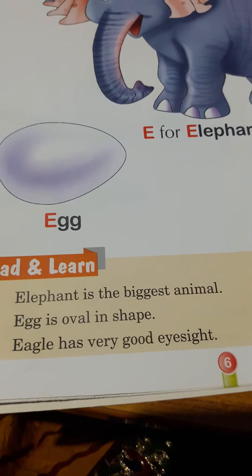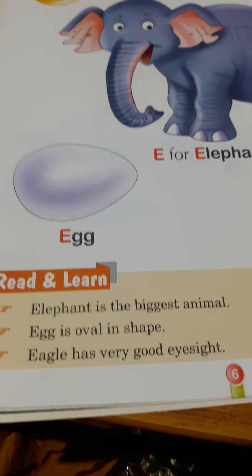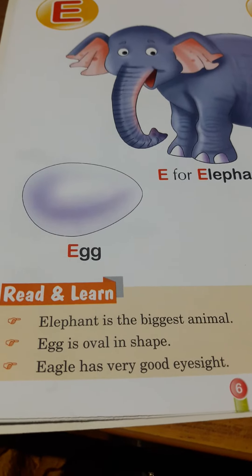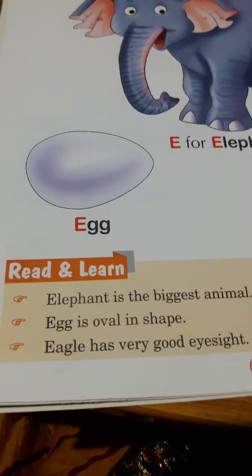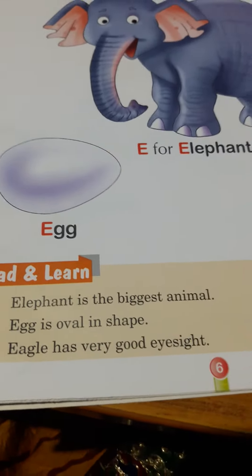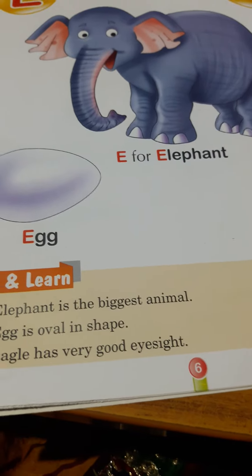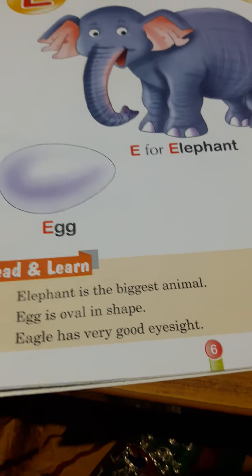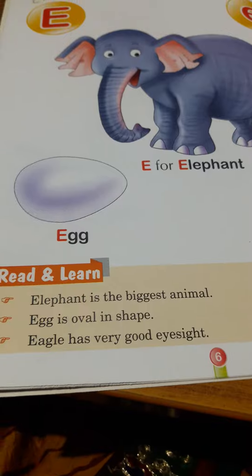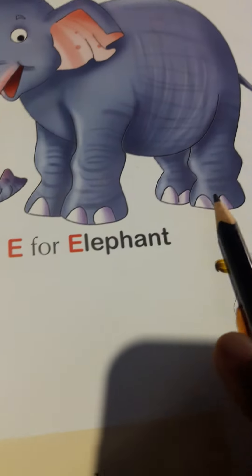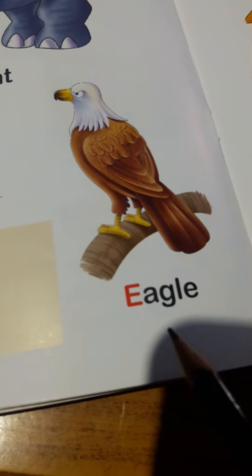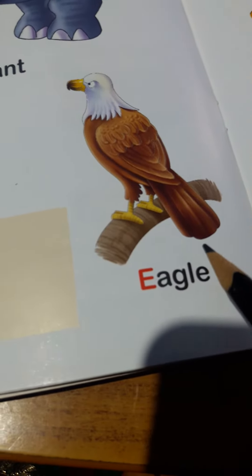Elephant is the biggest animal of the world. Elephant has two big ears and one big trunk. Egg is oval in shape. Eagle has very good eyesight, and eagle is a bird which flies very high. E-L-E-P-H-A-N-T elephant, E-G-G egg, and E is for eagle — E-A-G-L-E eagle. You all have to remember it.